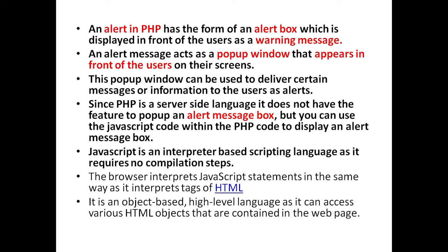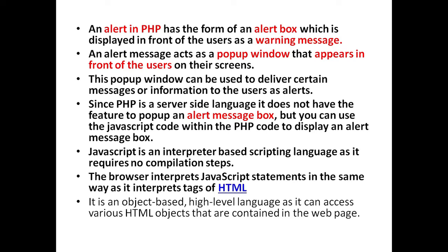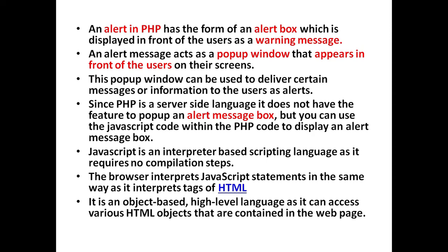JavaScript is an interpreter-based scripting language that requires no compilation steps. The browser can interpret JavaScript statements in the same way as it interprets HTML tags. It is an object-based high-level language that can access various HTML objects contained in the web page.